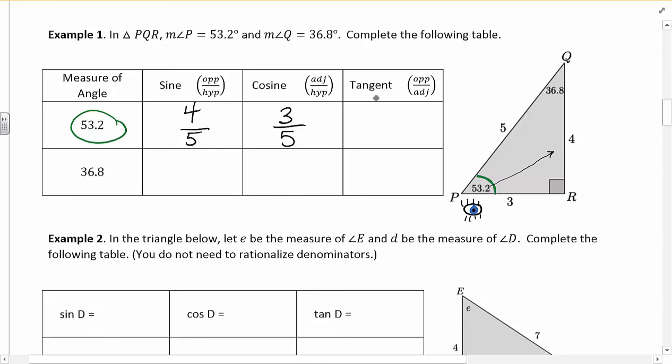And then last but not least, we have tangent. Tangent is when we compare opposite to adjacent. So opposite is 4. Adjacent is 3. So the tangent of 53.2 is 4 over 3.